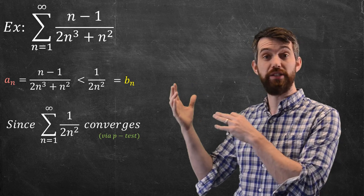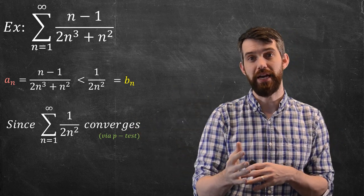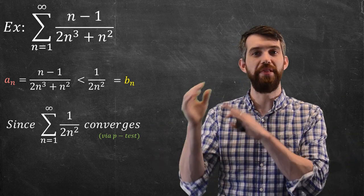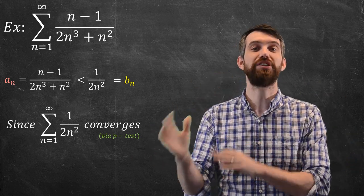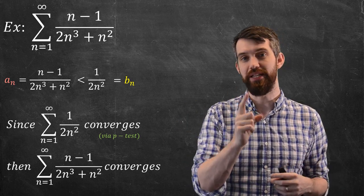So indeed, we know that the sum of this 1 over 2N squared, the BNs, that converges by the P test. And if this bigger thing converges, then the smaller ones, the sum of the ANs, has to converge as well. So what do we get? We get that this summation indeed converges too.